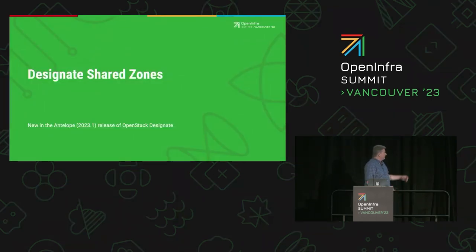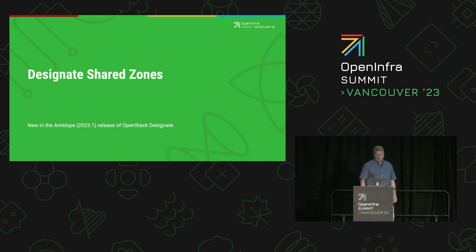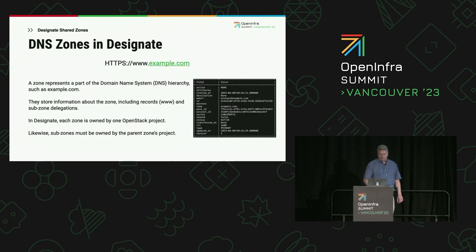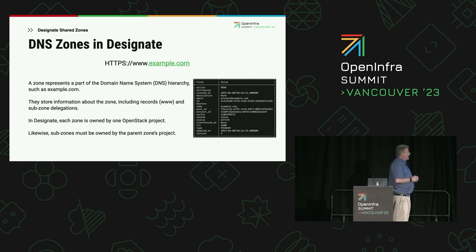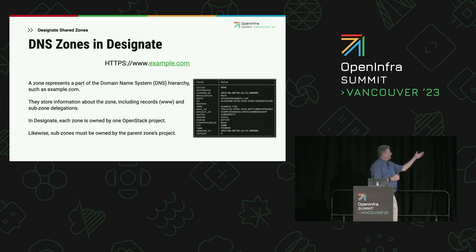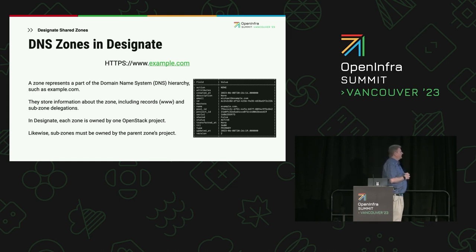Starting with Shared Zones — this is new in Antelope, so 2023.1. Just a quick review: DNS zones in Designate represent part of the DNS hierarchy. This is how you add and manage your record sets. For example, in a URL, I highlighted in green example.com as part of that DNS hierarchy — that would be represented as a zone in Designate.